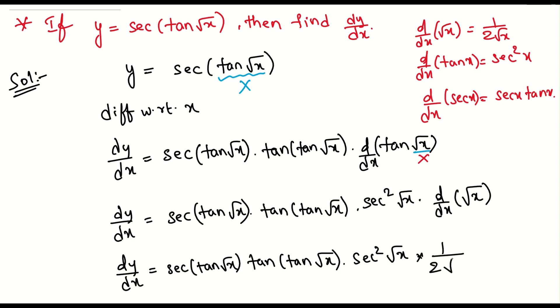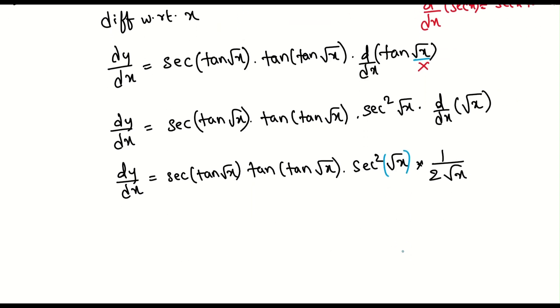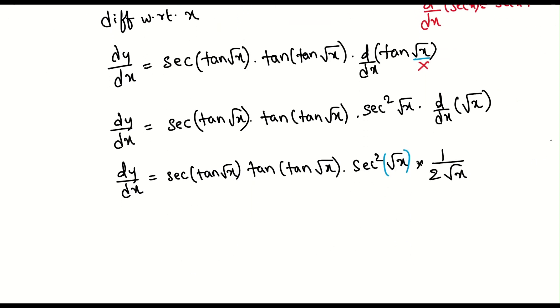So can I cancel this root x root x? No, I can't. Why? Because here secant of means what? This is an angle. This is a value. So what is the final answer here in our case? We can say that dy by dx must be equal to secant of tan root x into tan tan root x into secant square root x, the whole thing by 2 root x. Any doubts in this? I think this will be clear. Thank you.